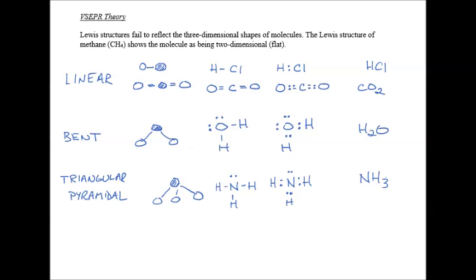And the last structure that we're going to draw for Lewis dot diagrams is called a tetrahedral. Tetra, you should know, means four. So this is four sides. So it looks like the triangular pyramidal.